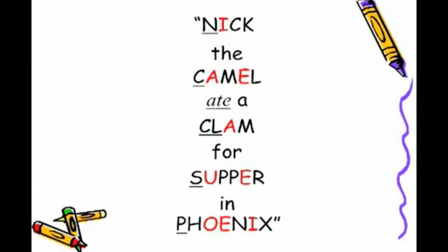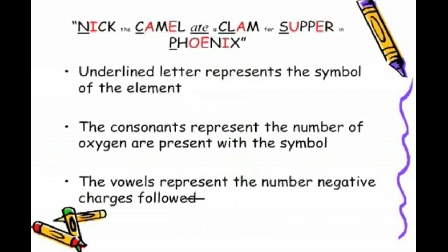The following phrase: Nick the Camel ate a clam for supper in Phoenix. The underlined letter represents the symbol of the element. So let's look at the underlined letter for each one of them. The letter N, Nick. What element in the periodic table we're looking at is nitrogen. The C for Camel represents carbon, the symbol for carbon.